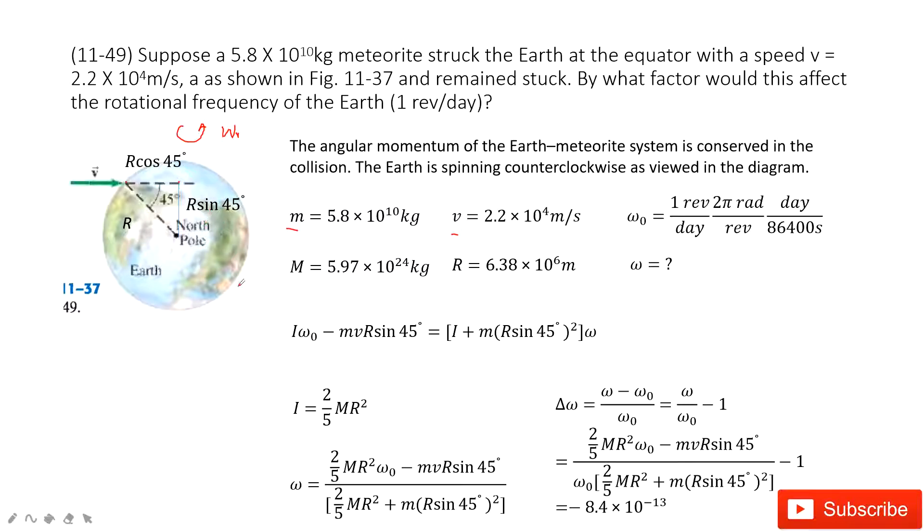So we can see first thing we look at is the initial angular momentum. So initial angular momentum, we can see it is I omega naught. This is from the earth, the spin of the earth. And also, we minus M v R sine 45 degrees. This is the angular momentum for this object.